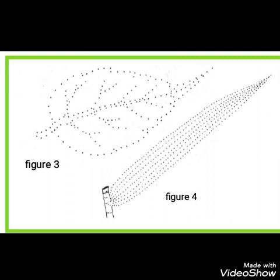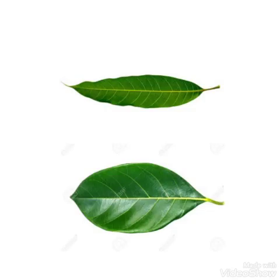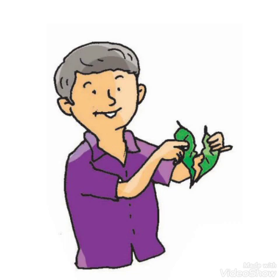Notice the pattern of the leaves in figure 3 and figure 4. Then complete the picture by joining the dots starting from the leaf stalk. Now you can see the veins of leaves clearly. Then take the leaves of mango tree and jackfruit tree, and try to tear them into several long pieces downward from the tip as seen in the picture.